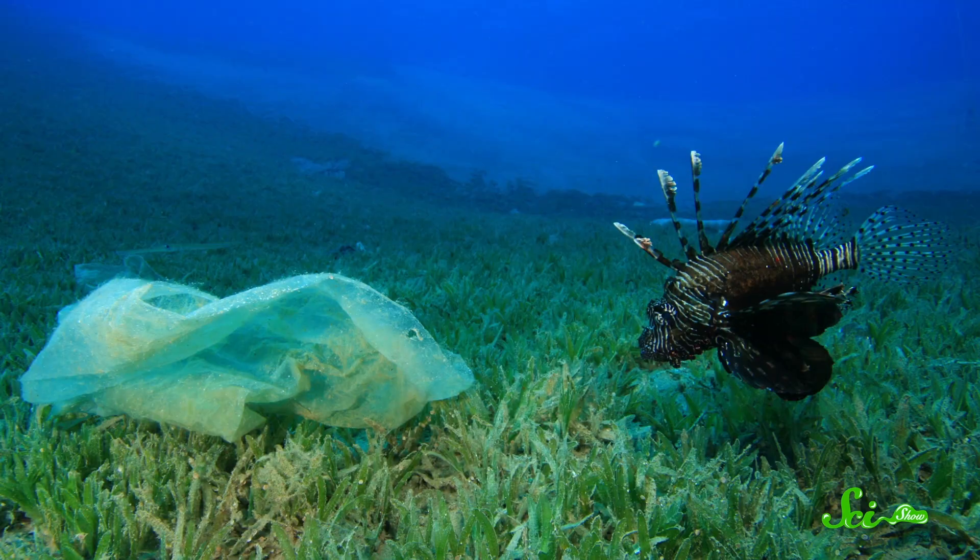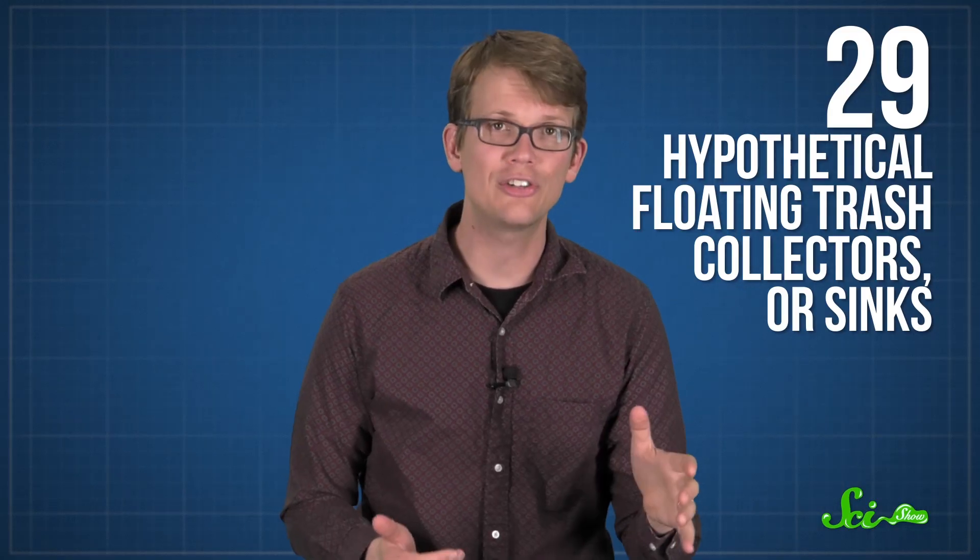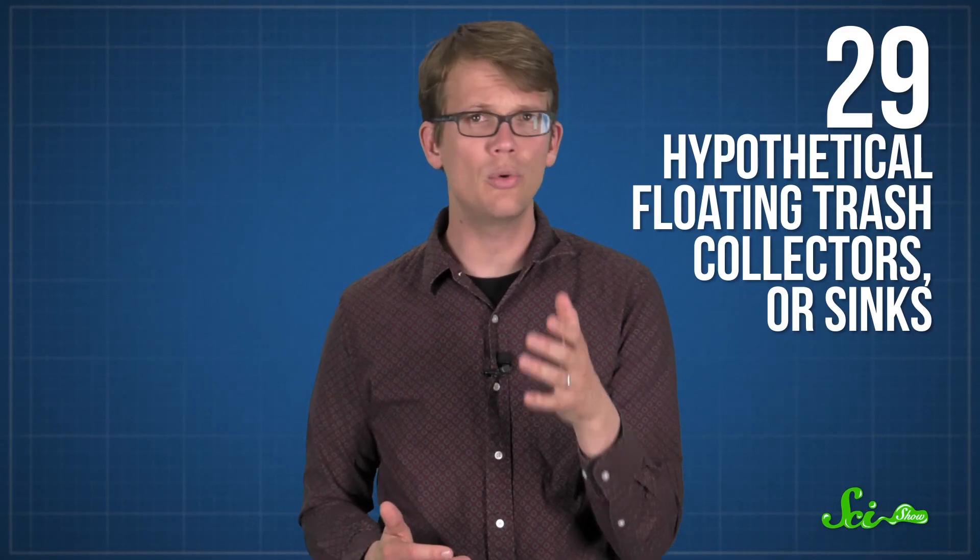Researchers from Imperial College London found that it could be more effective to recapture debris closer to shore, before currents carry it out to the middle of the ocean, where it's harder to collect. They ran a series of computer simulations using a model of 29 hypothetical floating trash collectors, or sinks, similar to ones produced by Slat. Their model took into account things like ocean currents, where the trash was coming from, and the distribution of phytoplankton and other marine life.